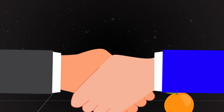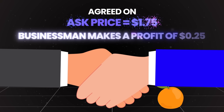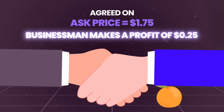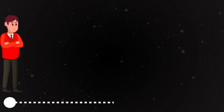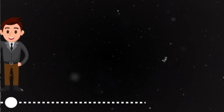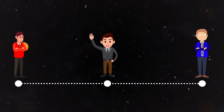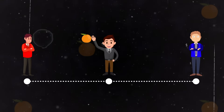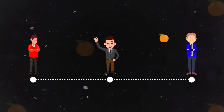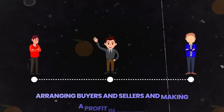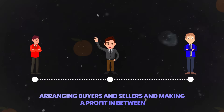So if the person who wants to eat the orange buys it at $1.75, the businessman makes $0.25 of profit. As you can see, there is a businessman in the middle that is facilitating the trade of oranges by arranging buyers and sellers and making a profit in between.